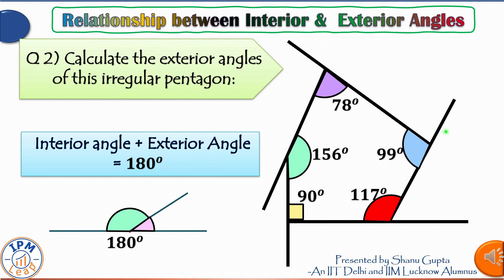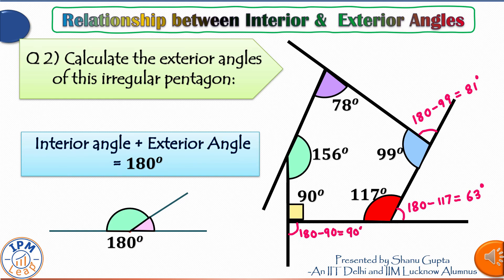Calculating each exterior angle: 180 − 99 = 81 degrees; 180 − 117 = 63 degrees; 180 − 90 = 90 degrees (a right angle); 180 − 156 = 24 degrees; and the last one: 180 − 78 = 102 degrees.